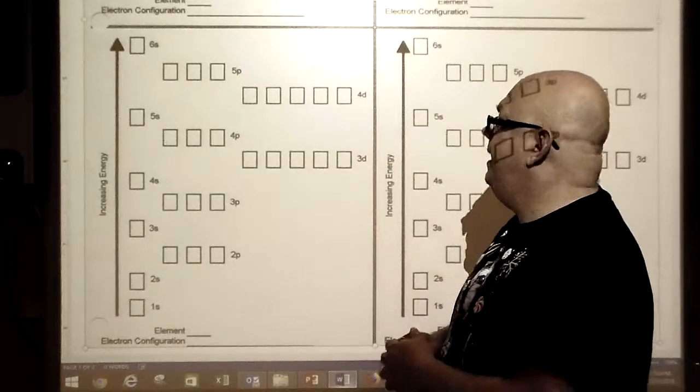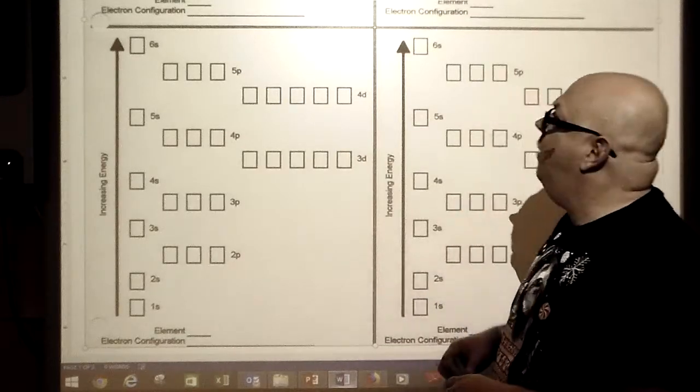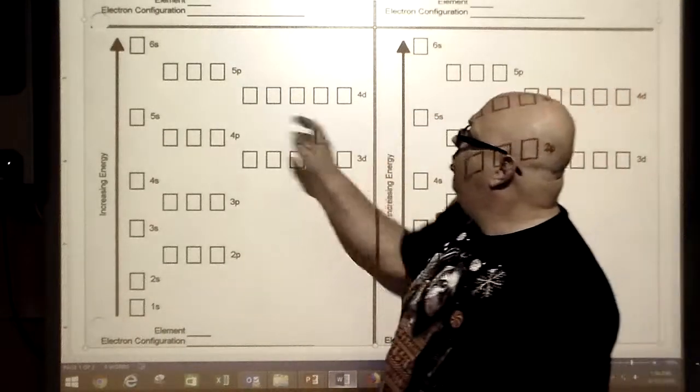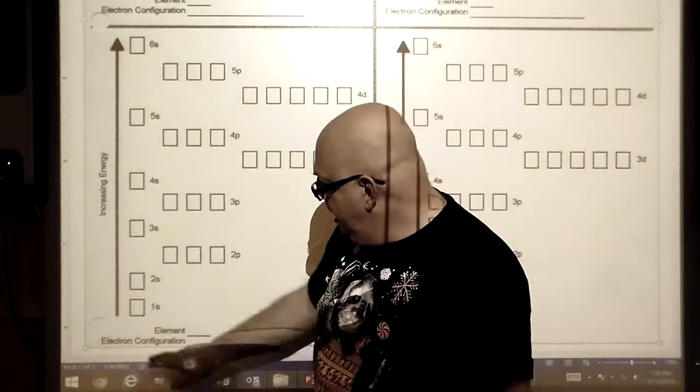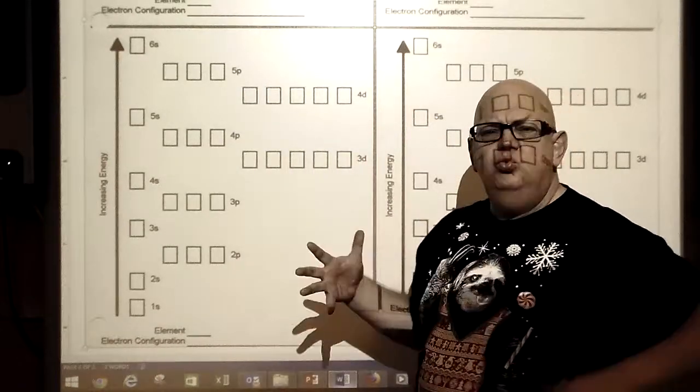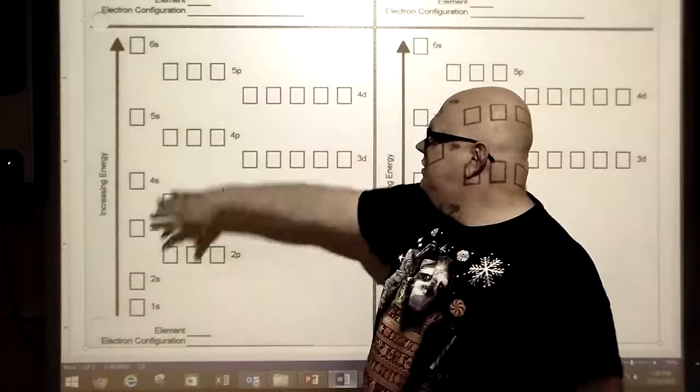So what I have here is one corner where I have all these boxes, and then down here I have element and electron configuration. What's up with the boxes and the numbers like 5s?